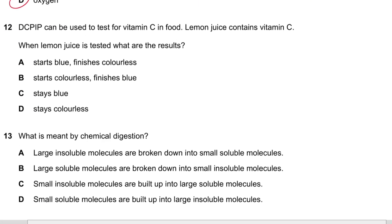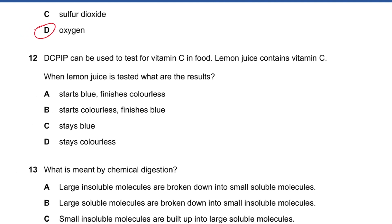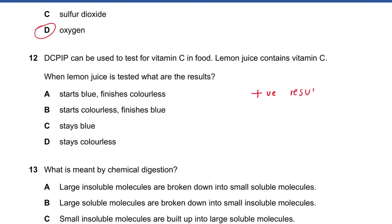Question 12: DCPIP can be used to test for vitamin C. Lemon juice contains vitamin C, so you're looking for a positive result. The positive result for DCPIP is blue to colorless — you have to memorize this. Answer is A.